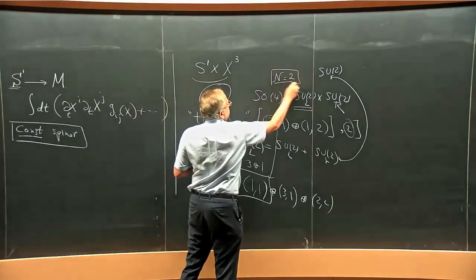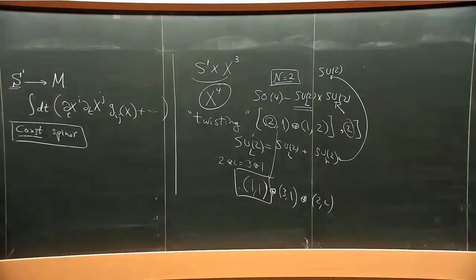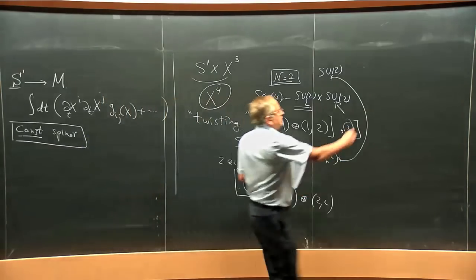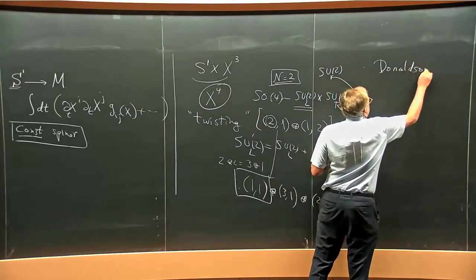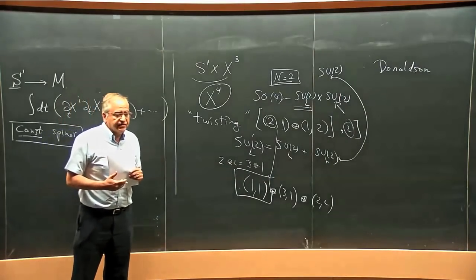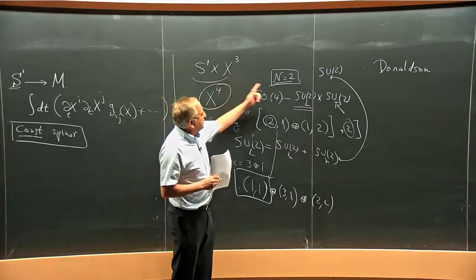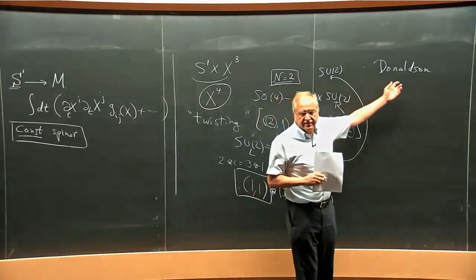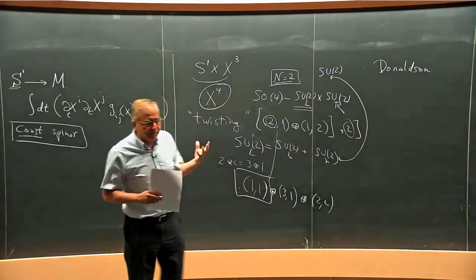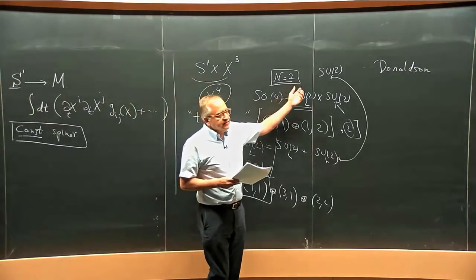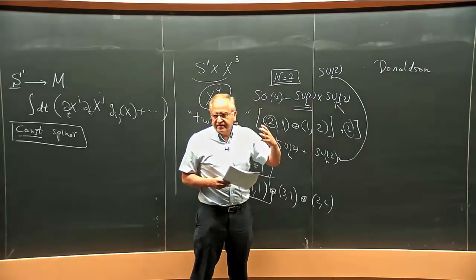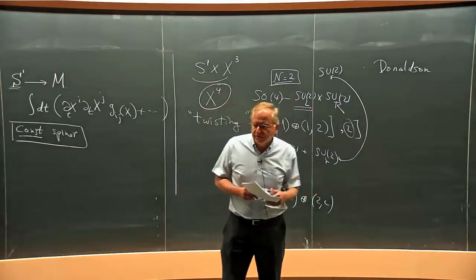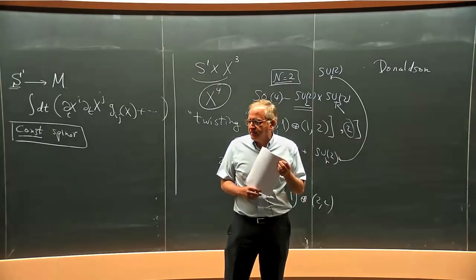This required N=2 supersymmetry. Using N=2 supersymmetry on arbitrary four-manifolds, he managed to define a topological theory. His motivation was to realize what is called Donaldson theory — Donaldson had already defined certain invariants for four-manifolds by studying instantons of gauge theories on four-manifolds. Witten managed to write the N=2 supersymmetric Yang-Mills theory with SU(2) gauge group which realized the theory Donaldson had written down mathematically. Later, when Seiberg and Witten got the infrared degrees of freedom of the SU(2) N=2 theory, that gave a new way of computing the Donaldson invariants, which was very powerful and led to many surprising rigorous math results.